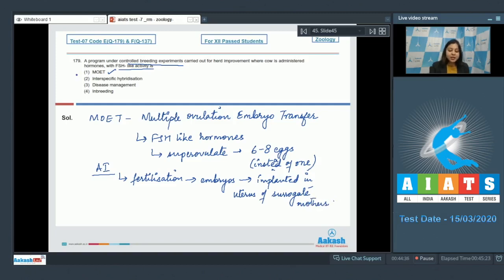So the correct answer is option number one. Let us see the other options. Number two, interspecific hybridization is incorrect as interspecific hybridization involves hybridization between two different species. Number three, disease management is incorrect. And inbreeding is breeding between members of same breed, so this is also incorrect. The correct answer becomes option number one.